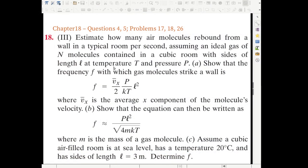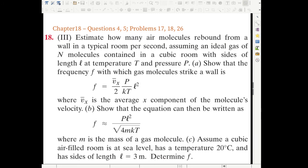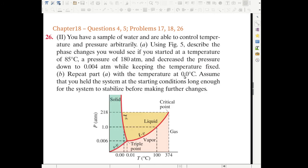Okay, so the next problem actually does not require a whiteboard, but we are going to be using this diagram here. So I will be using my cursor, which hopefully gets recorded. So here you have a sample of water and are able to control temperature and pressure arbitrarily. Using figure 5, which I reproduced here, describe the phase changes. You will see if you start at the temperature of 85 degrees Celsius, a pressure of 180 atm, and decrease the pressure down to 0.04 atm, while keeping the temperature fixed. Oh, by the way, for the previous problem, there is a part C. Assume a cubic room. This is just substitution of numbers in. I'm not going to do this.